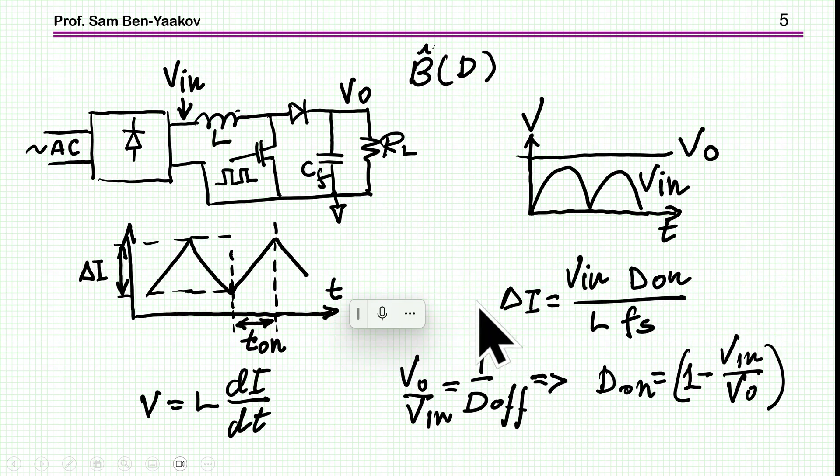Ripple is caused by the voltage, the square voltage across the inductor. During the on time, we have V in; during the off time, we have V out minus V in across the inductor, and this is causing the ripple. During the T on time, the current is increasing according to the state equation of the inductor. We can work it out that the delta I equals this expression. And D on can be found for any given point - this is a variable voltage. According to the transfer function of a boost converter, V out over V in equals one over D off, or D on is one minus V in over V out.